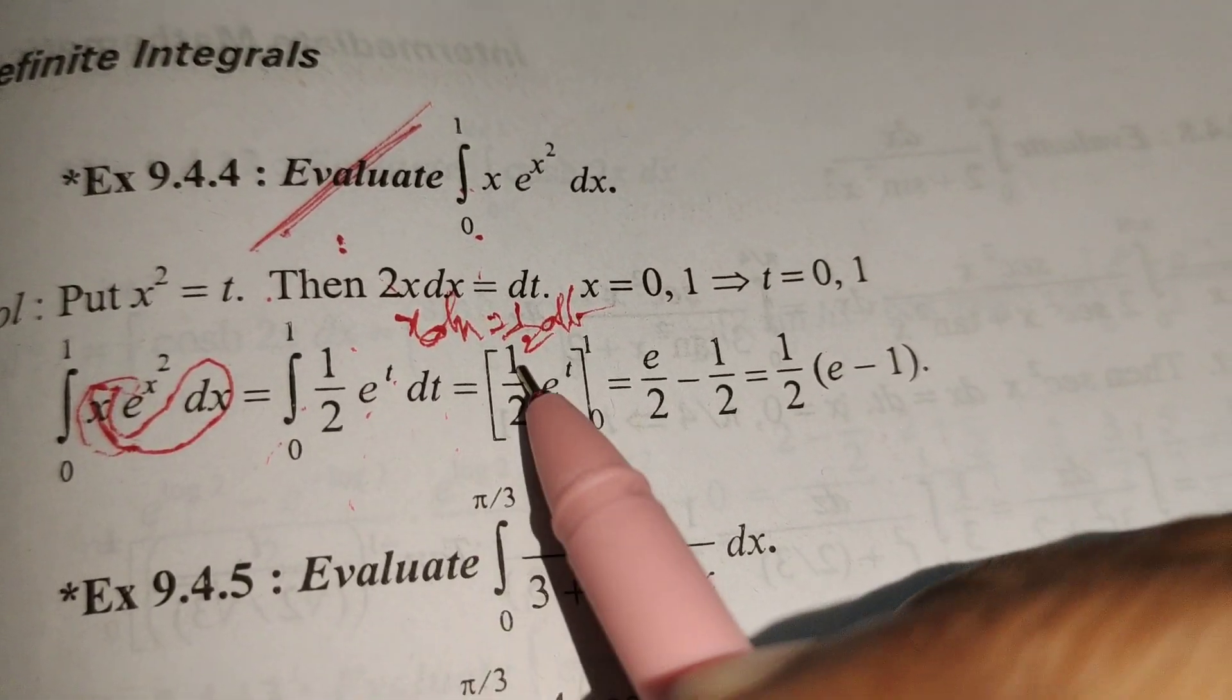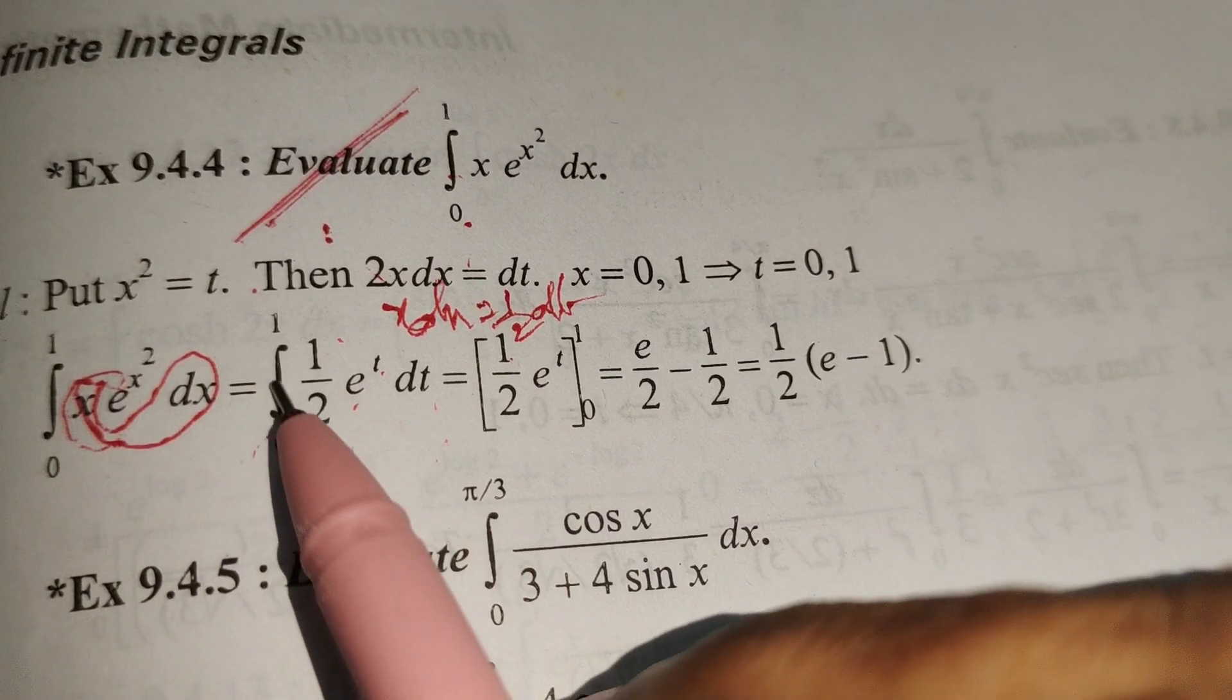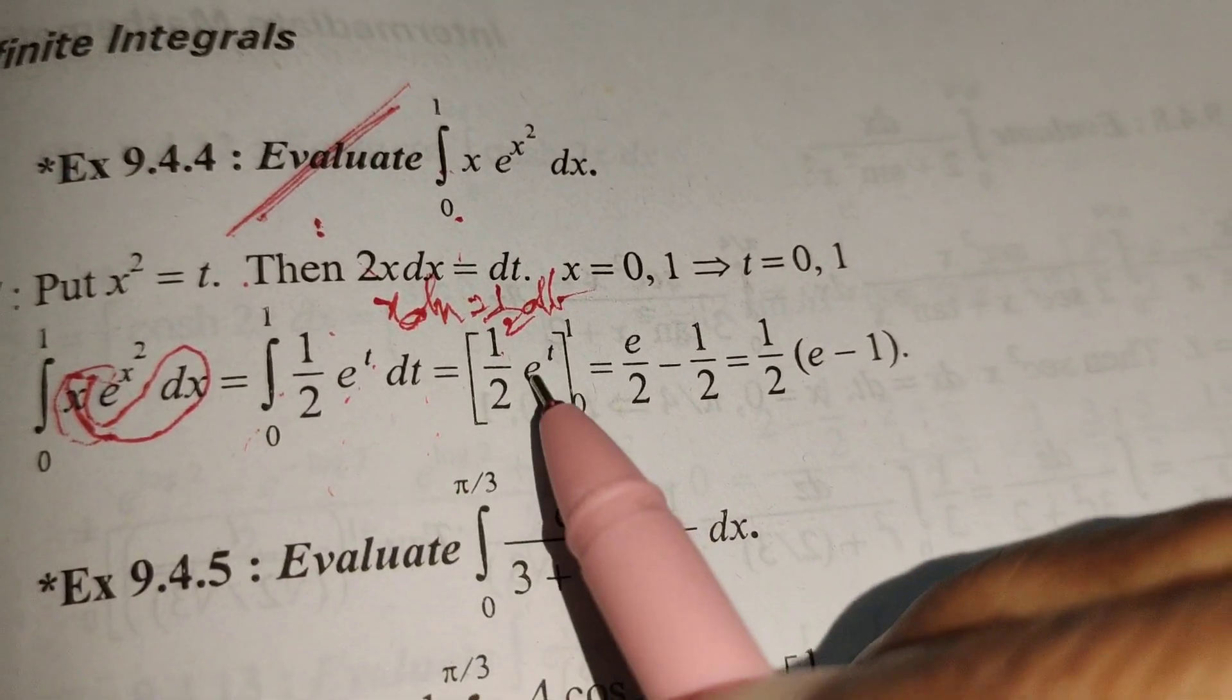Then ½ times e^t. The integration of e^t is e^t.